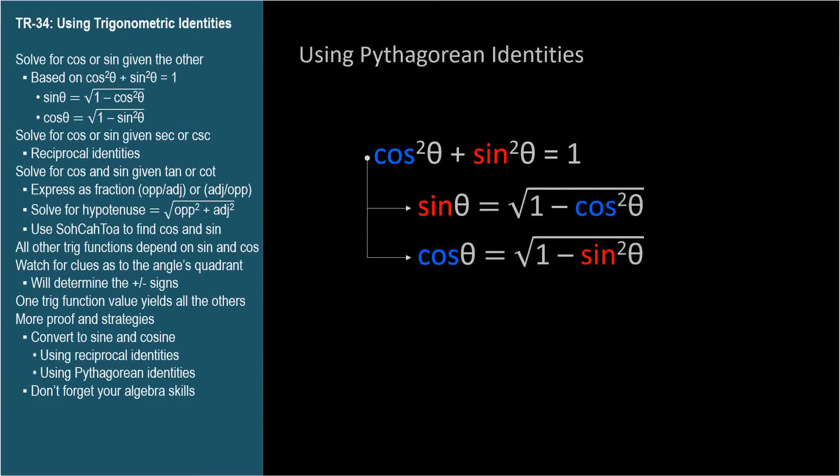We can manipulate the equation to isolate cosine instead of sine. These aren't new equations. They're the main equation after a bit of manipulation. We did this exact same thing back in TR-09.